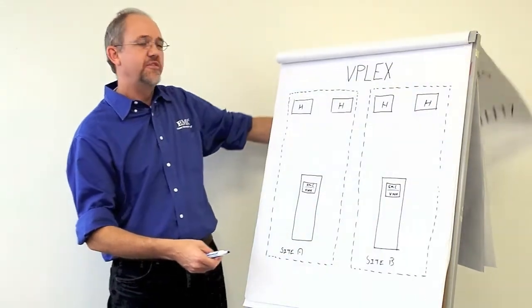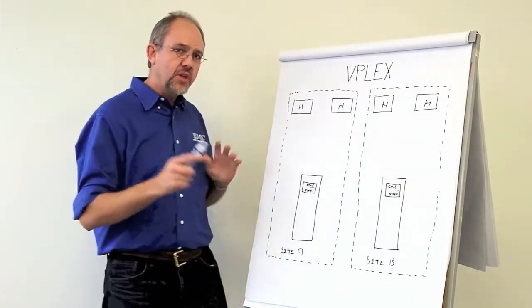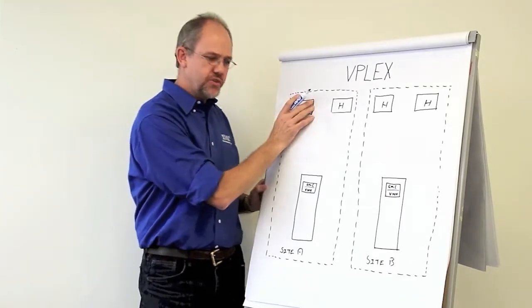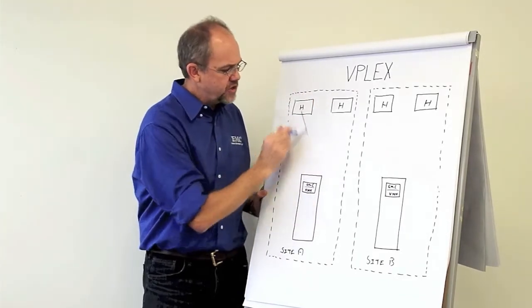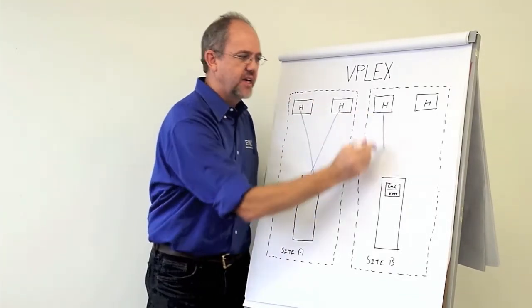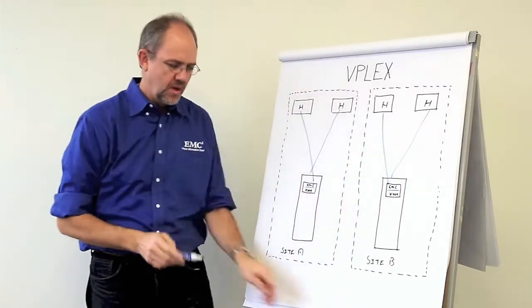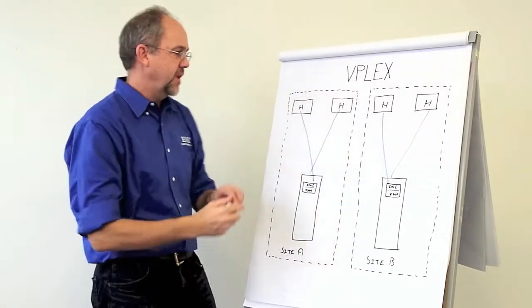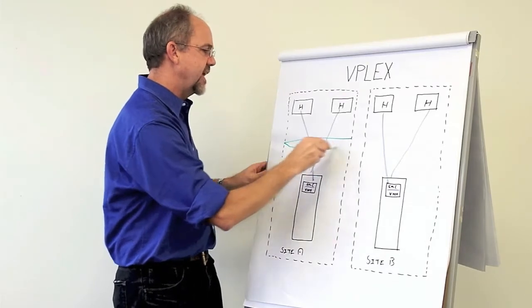Let's talk about VPLEX. So, a typical configuration, you've got your hosts, you've got your storage, your hosts are connected to your storage, site A and site B. What we do with VPLEX, we add an abstraction layer in here.